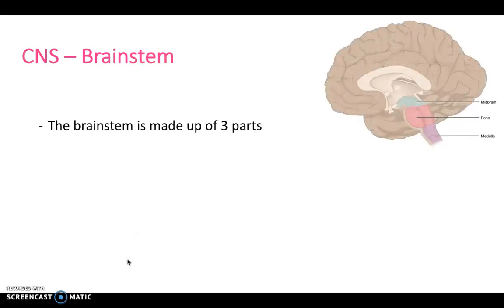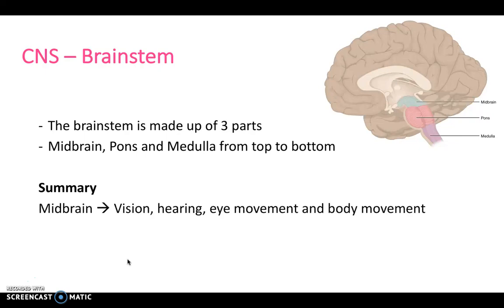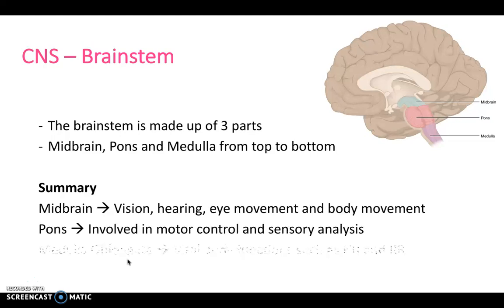Different regions of the brainstem have important functions. The midbrain has roles in vision, hearing, eye movement, and body movement. The pons is involved in motor control and sensory analysis. The medulla oblongata is responsible for vital body functions such as heart rate and respiratory rate. Don't forget the pons also has a role in the respiratory system and control of respiratory rate.